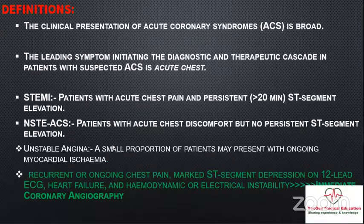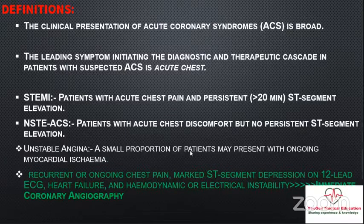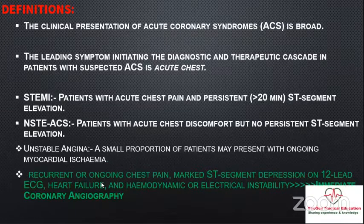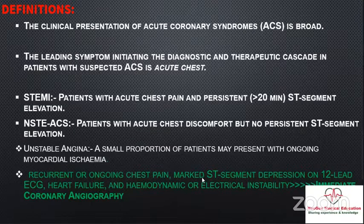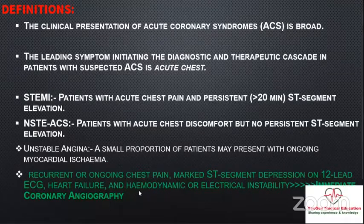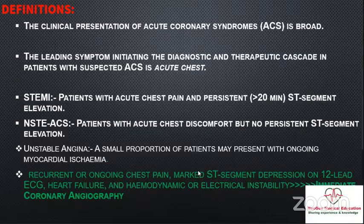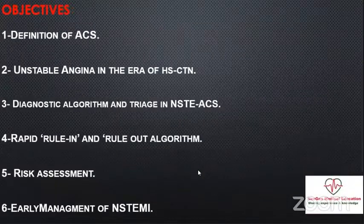Sometimes we find patients without evidence of myocardial injury, like unstable angina with chest pain at minimal exertion. However, we can still see unstable patients without evidence of myocardial injury — i.e., negative troponin — including patients with recurrent or ongoing chest pain, marked ST-segment depression on 12-lead ECG, heart failure, hemodynamic instability, or arrhythmia. In these cases, emergency cath lab assessment should be sought.